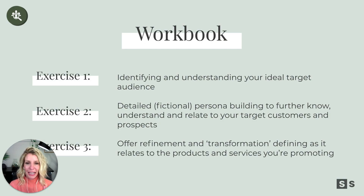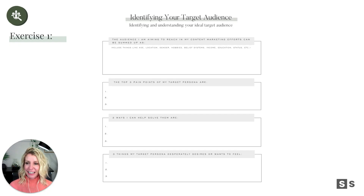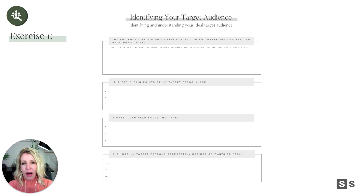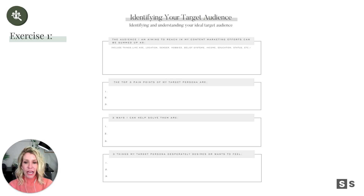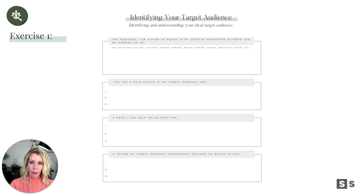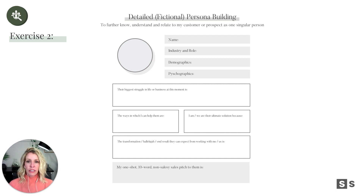So here you go — first exercises in your workbook: identifying and understanding your audience, then the persona building, and then the detailed piece of that. On a high level, the audience you're aiming to reach in your content marketing can be summed up as what? Just give us the broad strokes of the people that need you. What are those pain points — why do they need you? What are the top three? And then, what are the three ways you can solve this? What things does your target audience desperately desire or want to feel? Then: build your Janine.